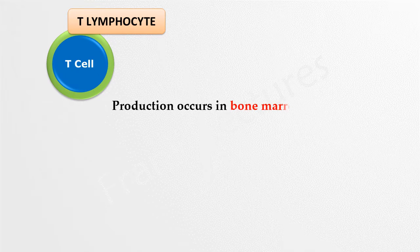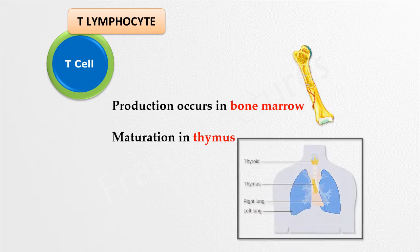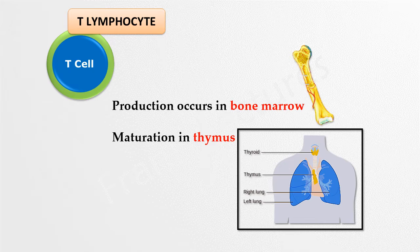T-cells or T-lymphocytes — the 'T' represents the thymus, and T-cells are thymus-derived. T-cell precursors originate in the bone marrow and migrate to the thymus to complete their maturation and become T-lymphocytes. These mature lymphocytes then migrate to the bloodstream and lymphoid tissue, where they circulate.